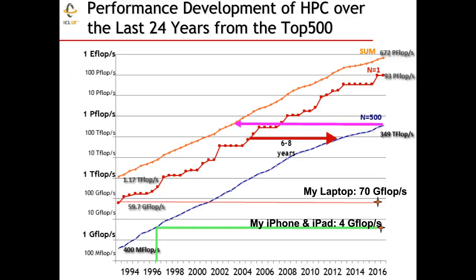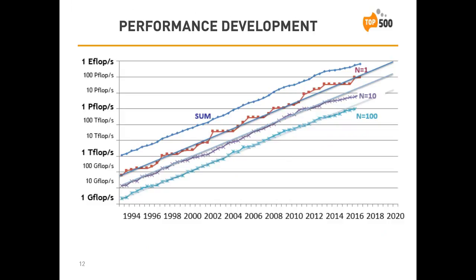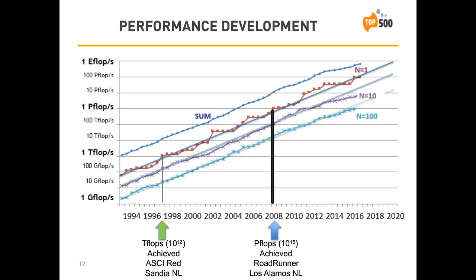The next slide looks at that same data but extrapolates into the near future — on a logarithmic scale. We achieved a teraflop, 10 to the 12 floating-point operations, back in 1997 on a computer called the ASCI Red machine at Sandia National Laboratory. About 11 years later we achieved a petaflop, 10 to the 15 floating-point operations, on the Roadrunner computer at Los Alamos National Laboratory. Making the projection, we would see that perhaps we'll achieve an exaflop around 2020.